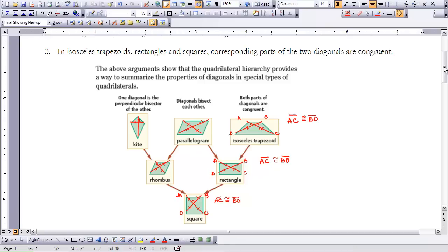But if you look at the kite, we know that one diagonal's the perpendicular bisector of the other. So a rhombus is a kite, so that holds true there. And a square is a rhombus and a kite, so that follows through.